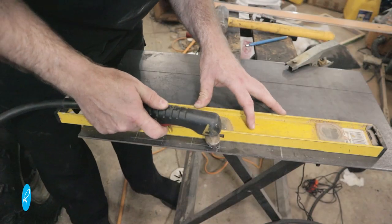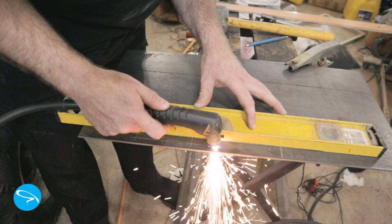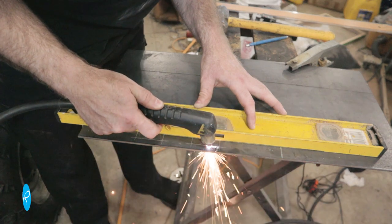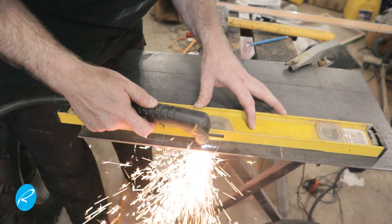I trace the pattern from my foam core mock-up and cut it out with a plasma cutter. I'm using a level here as a guide, so my cuts come out straight. You don't need fancy tools for this. You could use a jigsaw with a metal blade or a bandsaw.